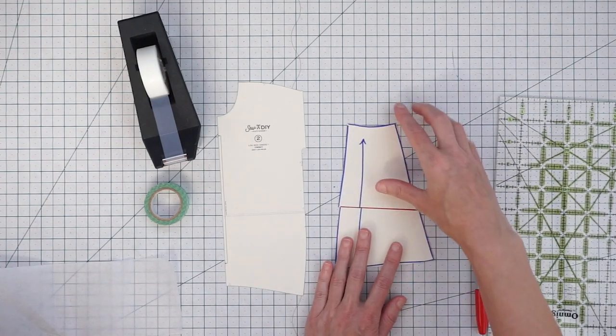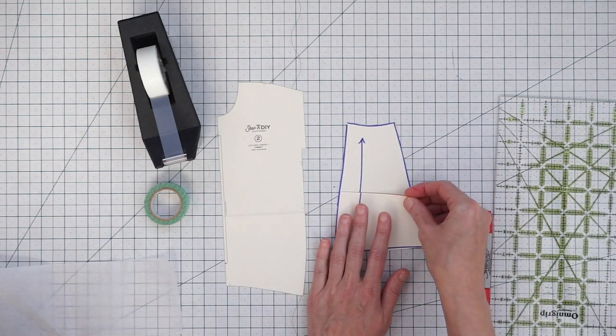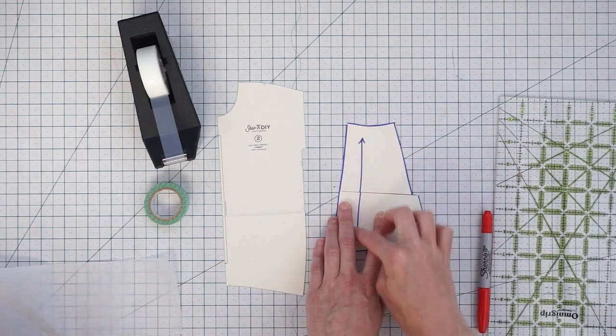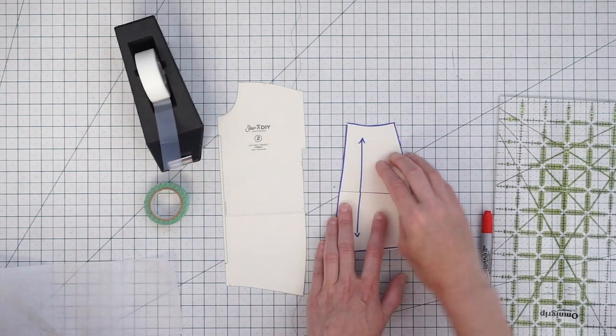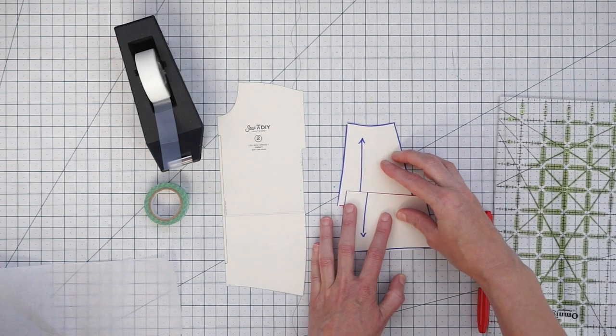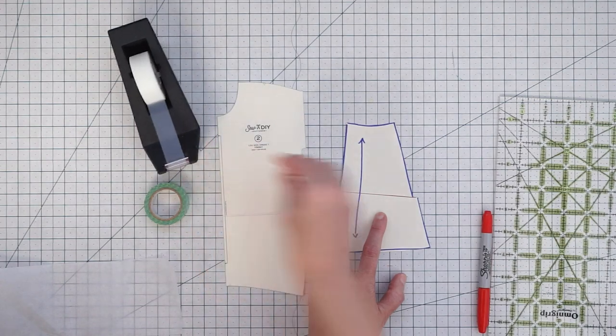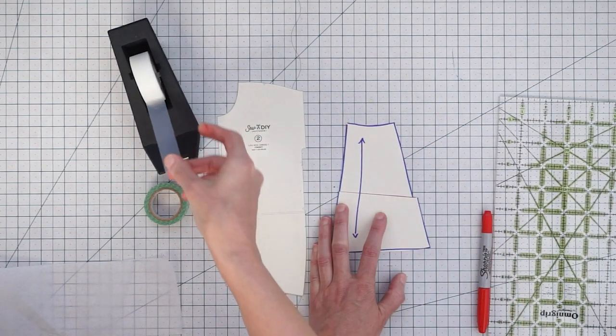Then you would just bring the pattern up like this and tape it in place. And we can do the same over here. Just lift it up and you want to make sure that you keep that grain line aligned. You don't want it to be off over here or over here because it's not going to hang the same way. So you just overlap and then tape it in place.